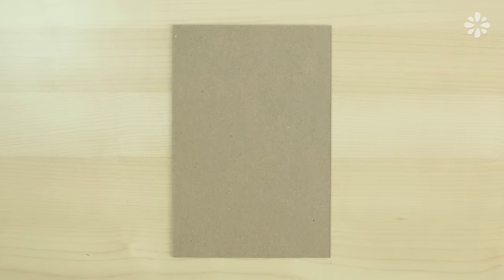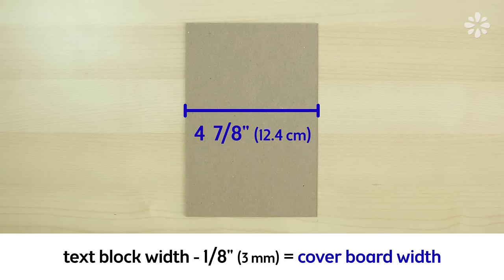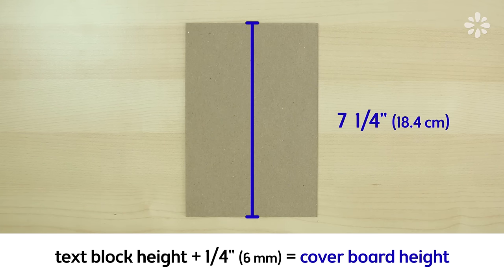And now for the covers. I trimmed out my covers from thick book board. For the measurements, since my book is five by seven, here is the width that I made. And if your text block is a different size, here's a formula to figure out the width. And here is the height. This will give you an eighth of an inch hang on your book cover.